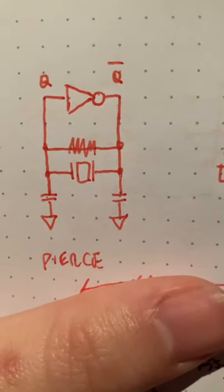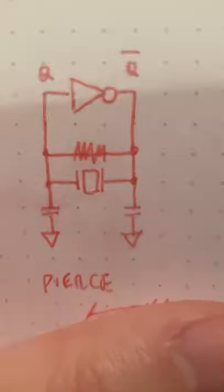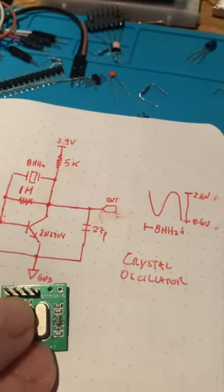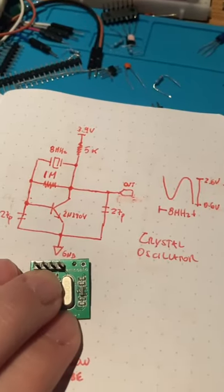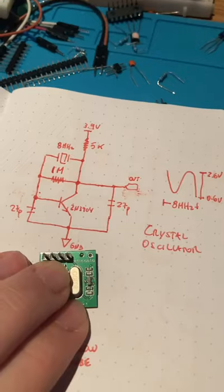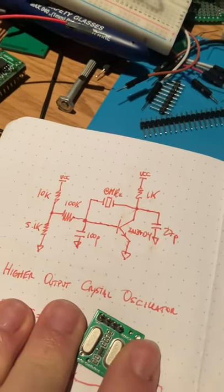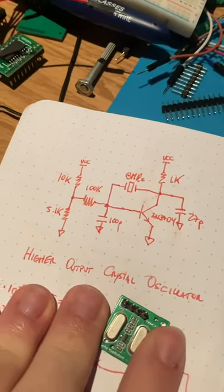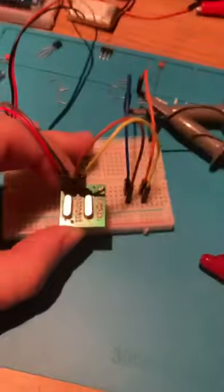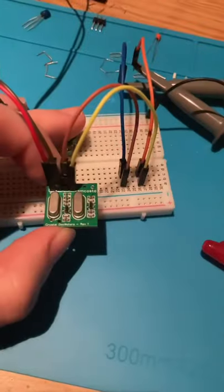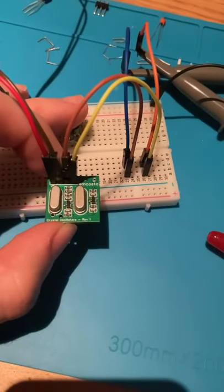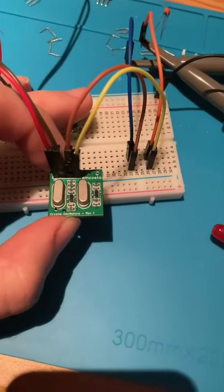This is the high-level design — this is the first half of the circuit. This is the second half of the circuit, here we have it connected to both probes in my oscilloscope.